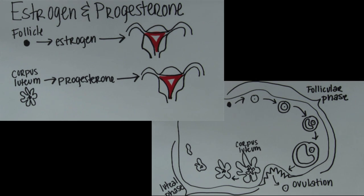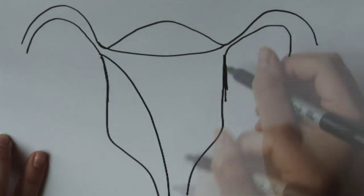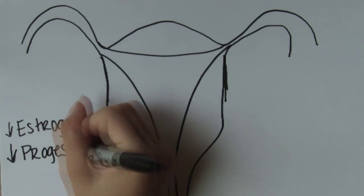The secretion of progesterone is maintained for several days, but if the egg is not fertilized, the corpus luteum will wither, and falling levels of progesterone and estrogen trigger the shedding of the stratum functionalis as the menstrual flow.